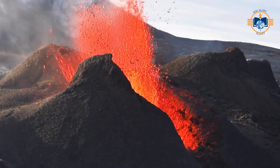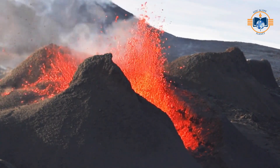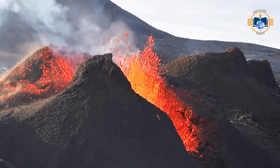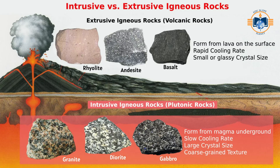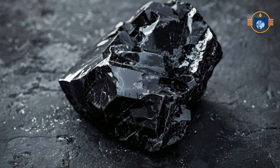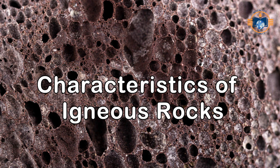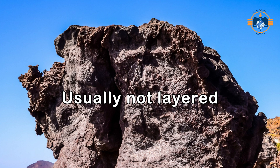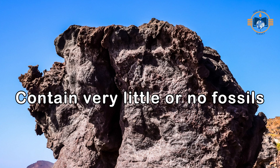Extrusive igneous, or volcanic, rocks are formed from magma that cools and solidifies at or near the Earth's surface. Exposure to the relatively cool temperature of the atmosphere or water makes the erupted magma solidify very quickly. Rapid cooling means the individual mineral grains have only a short time to grow, so their final size is very tiny, or fine-grained. Sometimes the magma is quenched so rapidly that individual minerals have no time to grow – this is how volcanic glass forms. Characteristics of igneous rocks: hard and strong, made of interlocking crystals, usually not layered, and contain very little or no fossils.